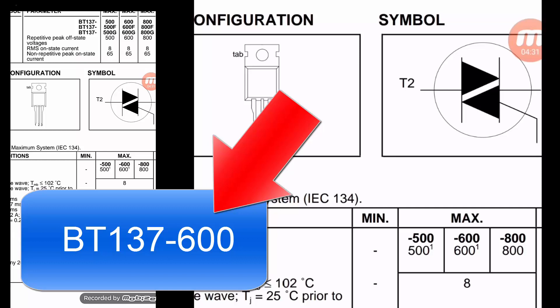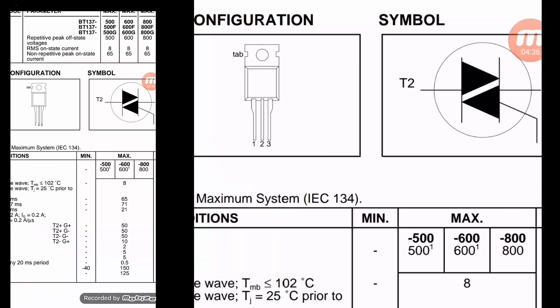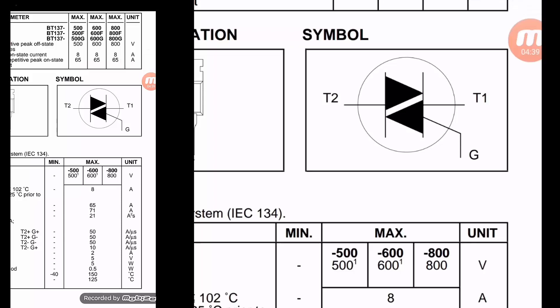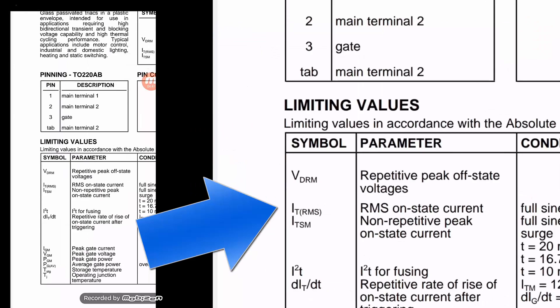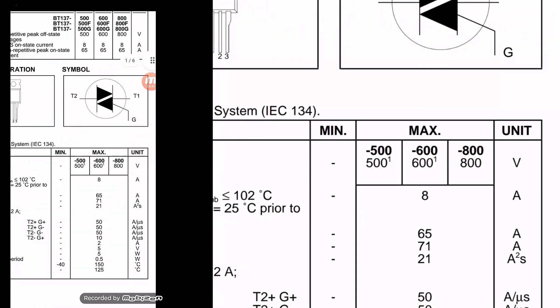If it is 800, that will take a stress up to 800 volt. But in our case it is 600 volt. Then RMS on-state current, that is 8 ampere. So from these two parameters we find that it is an 8 ampere, 600 volt triac.